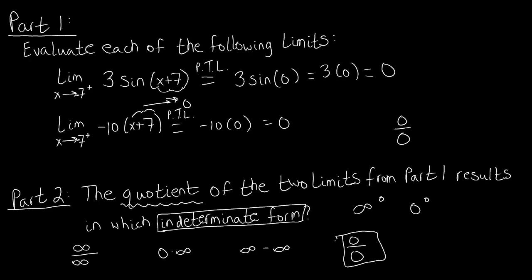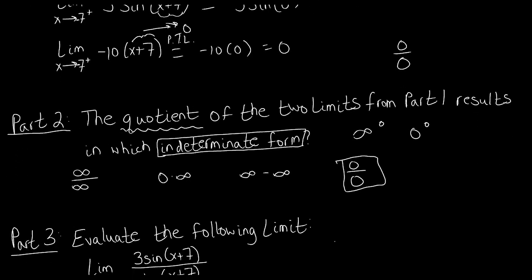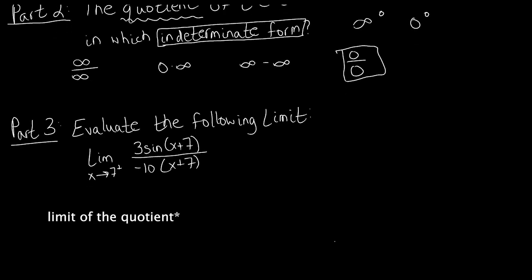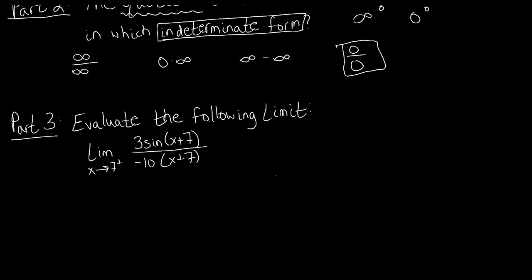Moving on to part 3, we need to evaluate the quotient of these two limits. We already know that passing to the limit inside this quotient gives us 0 over 0, which is indeterminate. Because it's an indeterminate form, this implies we can use L'Hopital's rule — abbreviated LH. L'Hopital's rule tells us we can take the derivative of the numerator and the derivative of the denominator individually, then evaluate the limit of those derivatives to get a more meaningful result instead of 0 over 0.